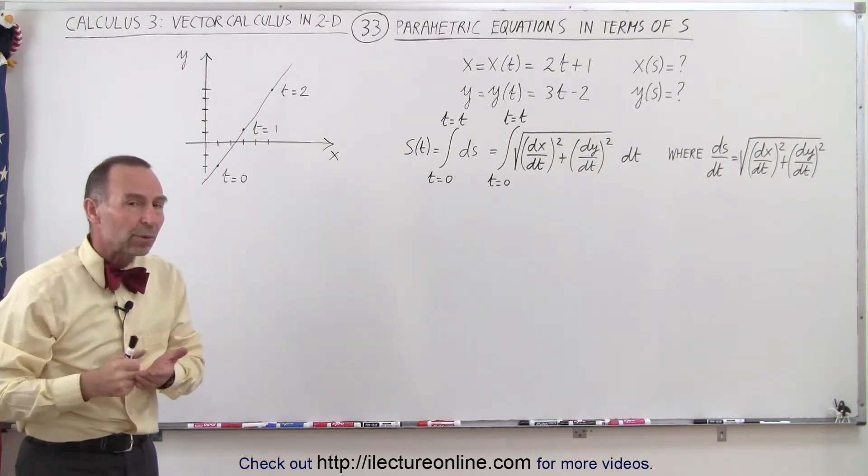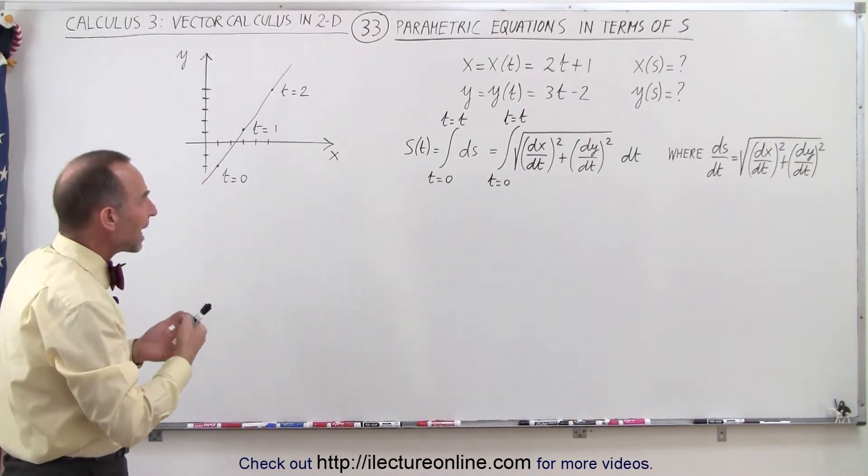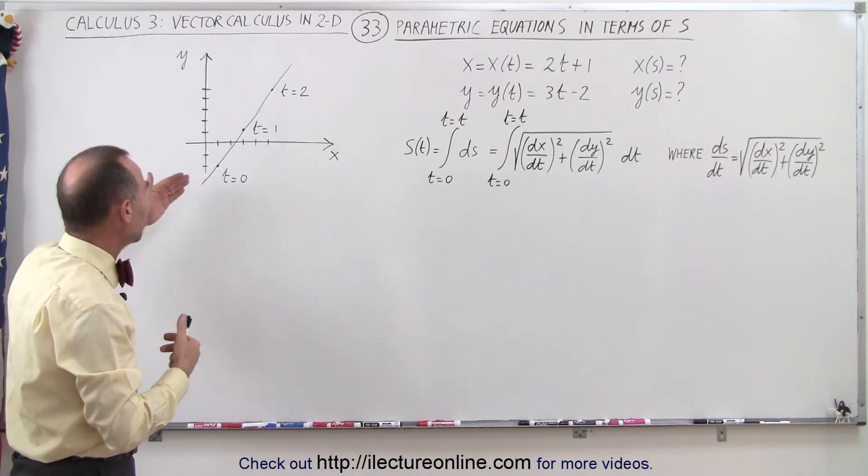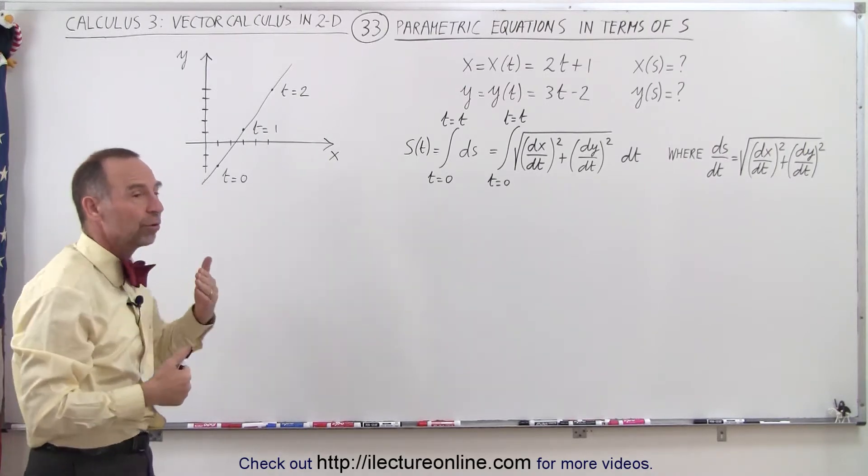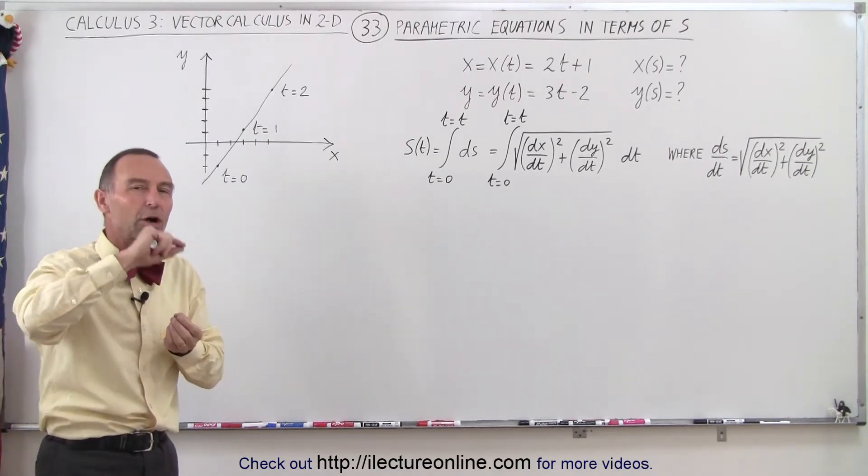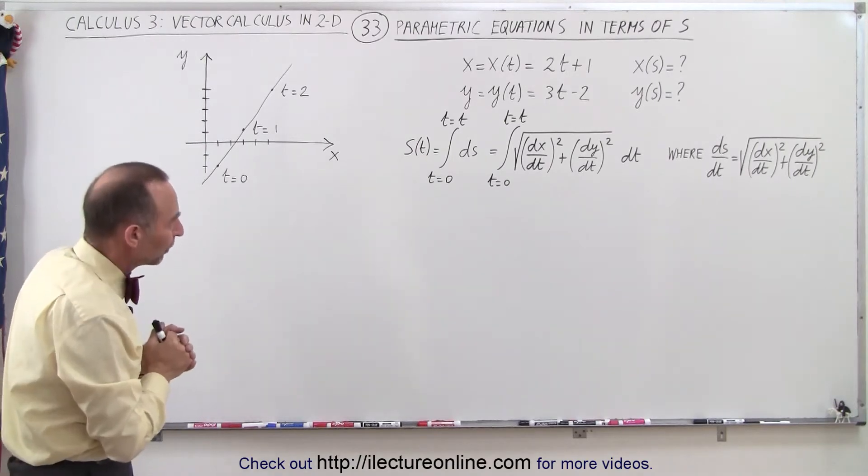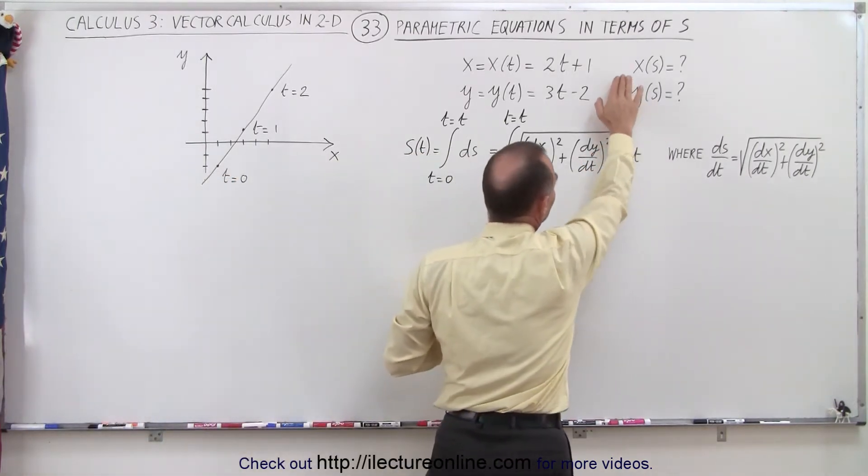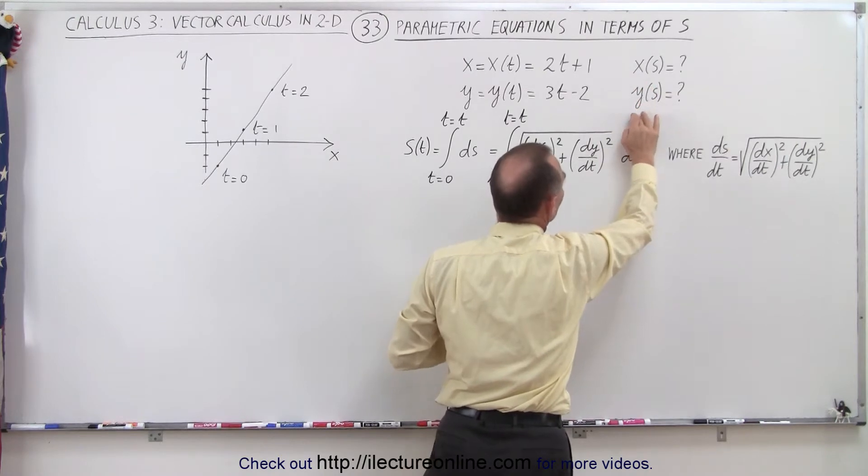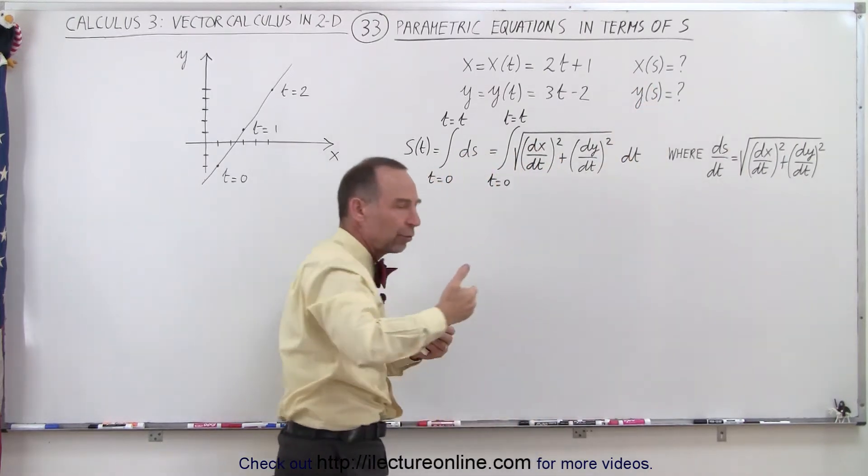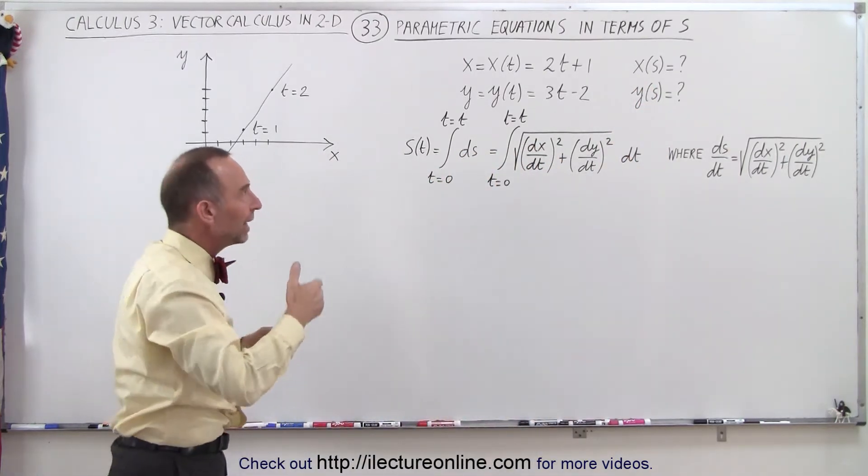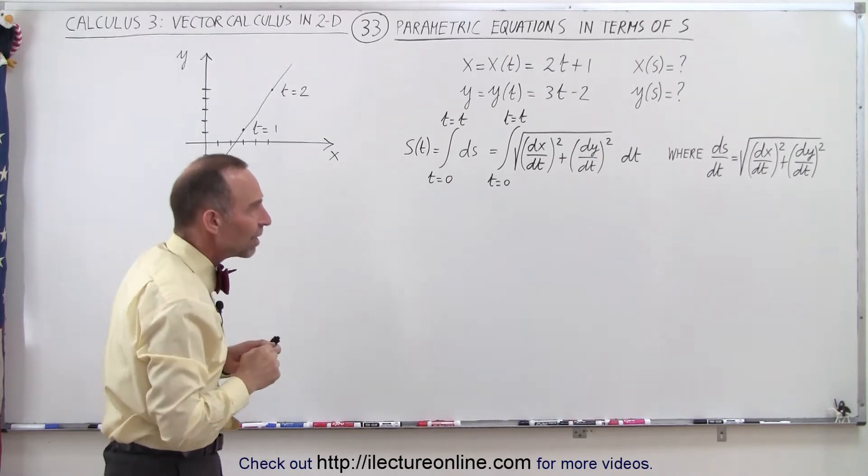But sometimes we want to express the x and y not in terms of the parametric variable t, but in terms of the variable s. That's the arc length along the curve. And so this is what we're trying to find now. We're trying to find x as a function of s and y as a function of s. The s, of course, is the arc length along the curve instead of the parametric variable t.